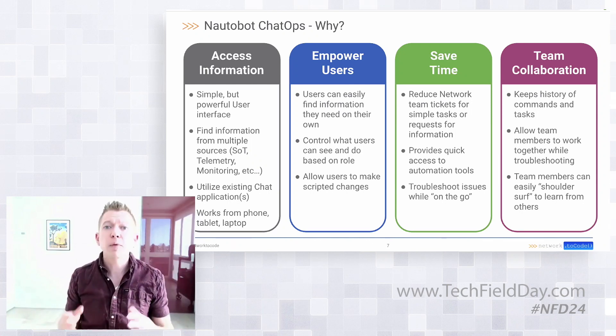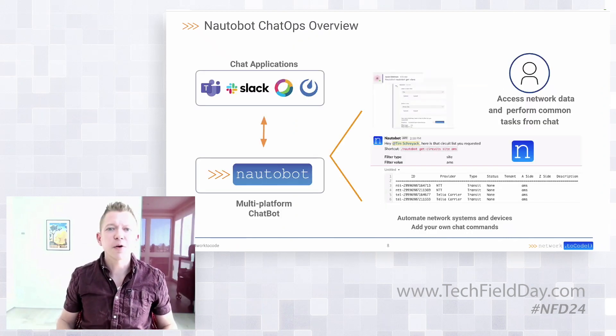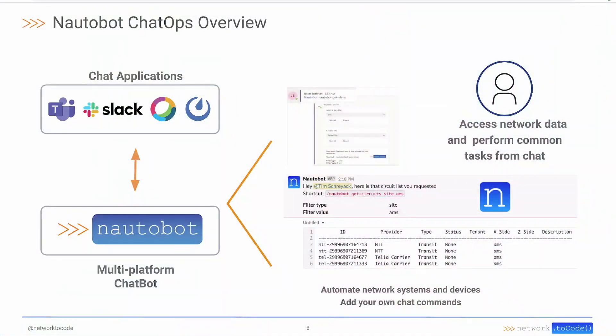Any questions about why we believe ChatOps should be a first-class citizen? Looking at the overview of ChatOps — out of the box, we support multiple chat applications: Microsoft Teams, Slack, WebEx Teams, all supported through the Nautobot platform. We have this multi-chat ability because different environments use different applications, and we want to be open to that, presenting information back to users regardless of the particular chat application.